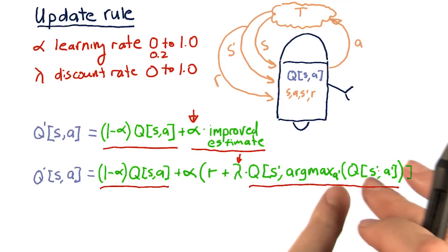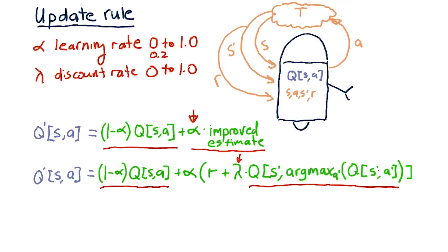So this collapses just to A prime, and then we look up the Q table value for Q, S prime, A prime.